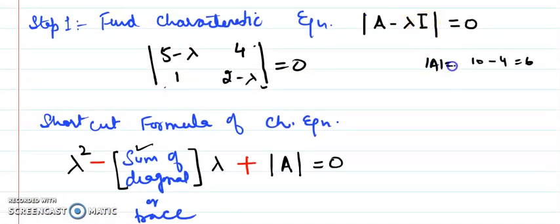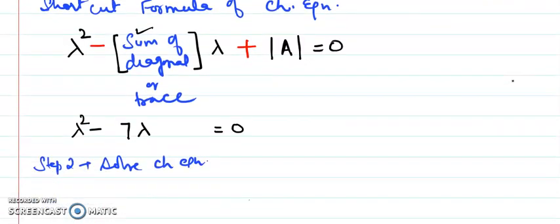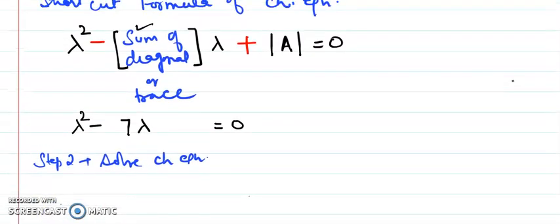Determinant comes out to be and trace, if you say what is trace, trace is equal to 7. So we got the answer here, lambda square minus of the formula, trace 7, lambda and determinant comes out to be 6.